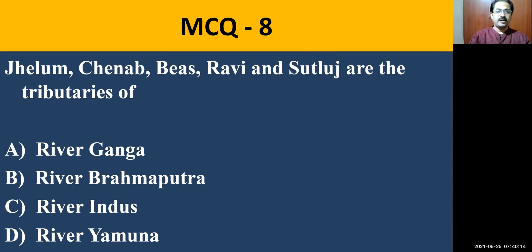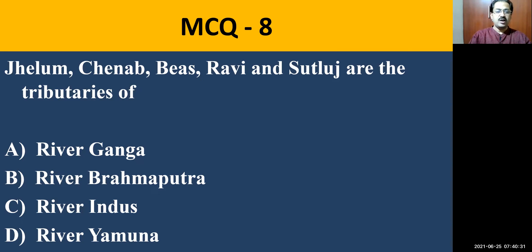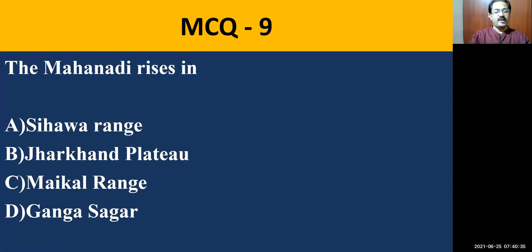MCQ question number eight: Jhelum, Chenab, Beas, Ravi, and Sutlej are the tributaries of — Ganga, Brahmaputra, Indus, or Yamuna. The correct answer is Indus. Jhelum, Chenab, Beas, Ravi, and Sutlej are the tributaries of River Indus.